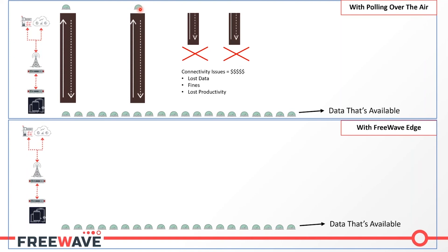The other challenge is that no connectivity type is perfect. If you have a connectivity issue or a loss in connectivity, that poll response over the air just doesn't get any data at all. This ends up affecting your bottom line with lost data, lost productivity, and even fines if you're not able to report data accurately for a certain period of time to your regulatory agency. And once your connection is re-established, you're still getting only that slow one data point update.